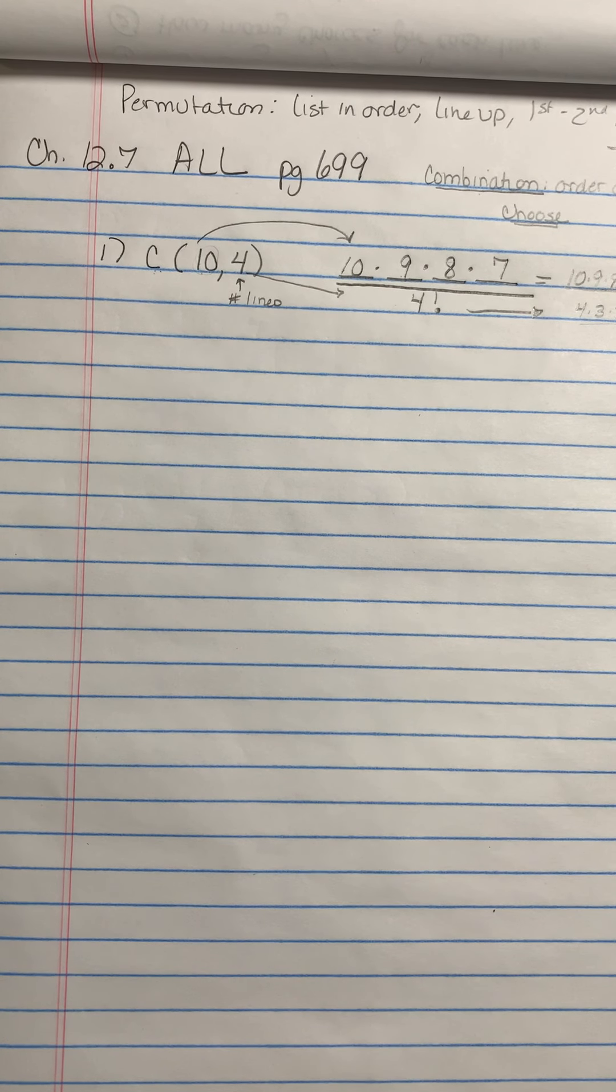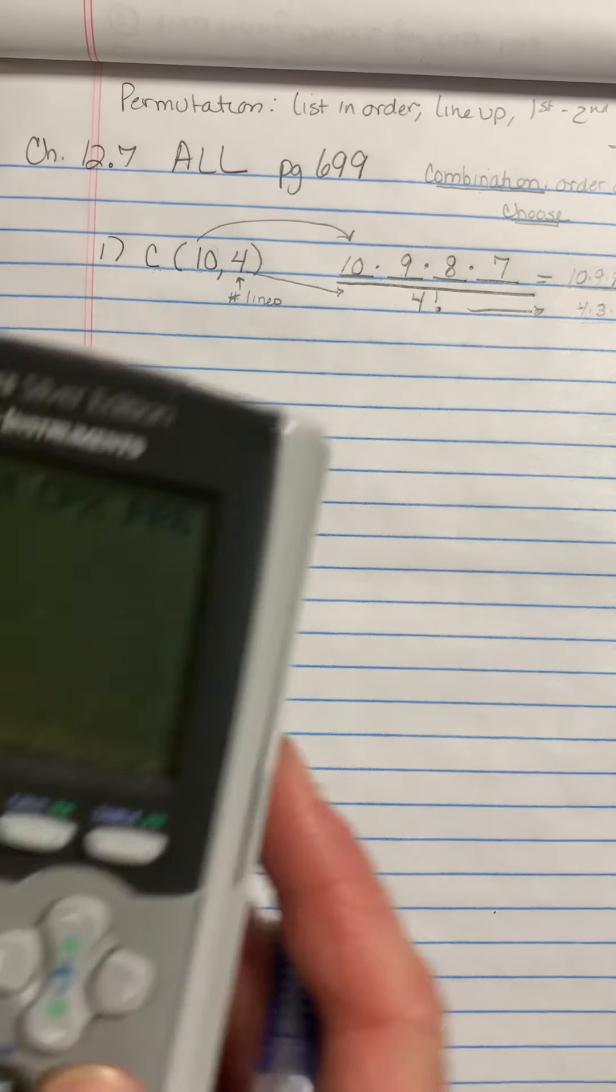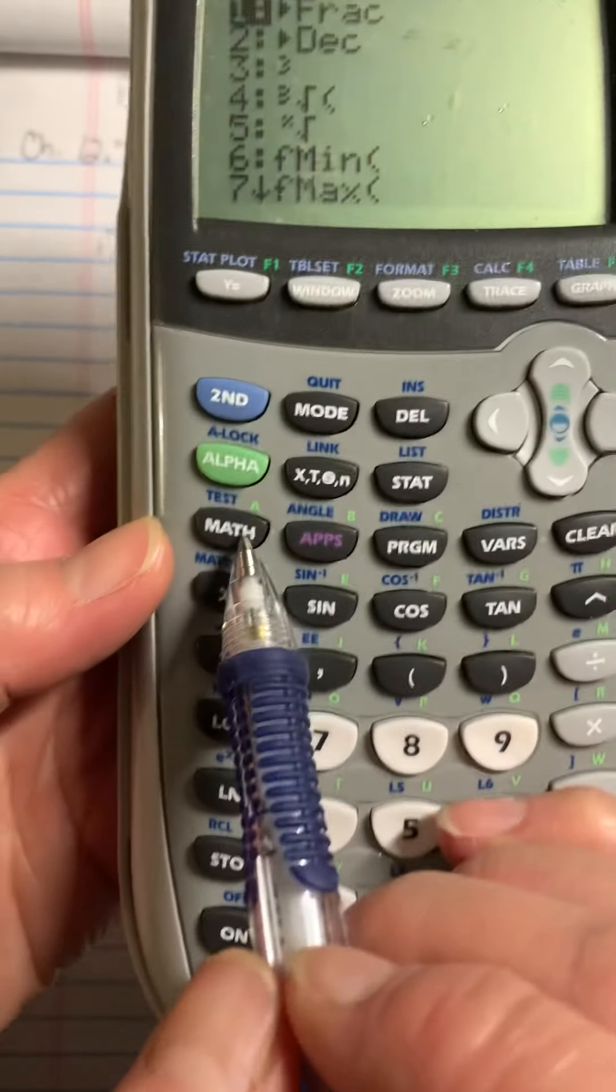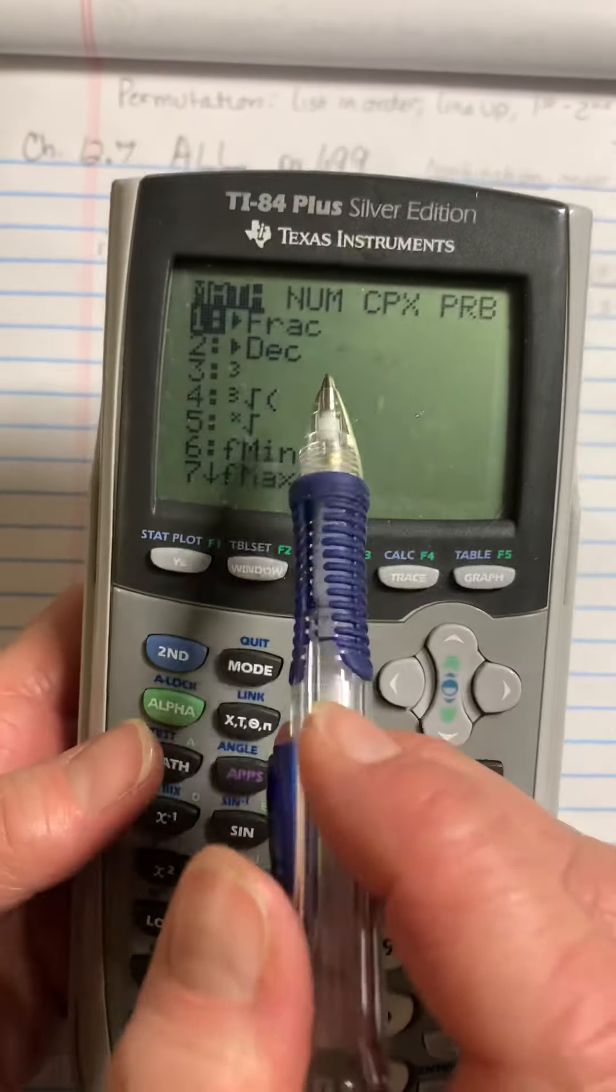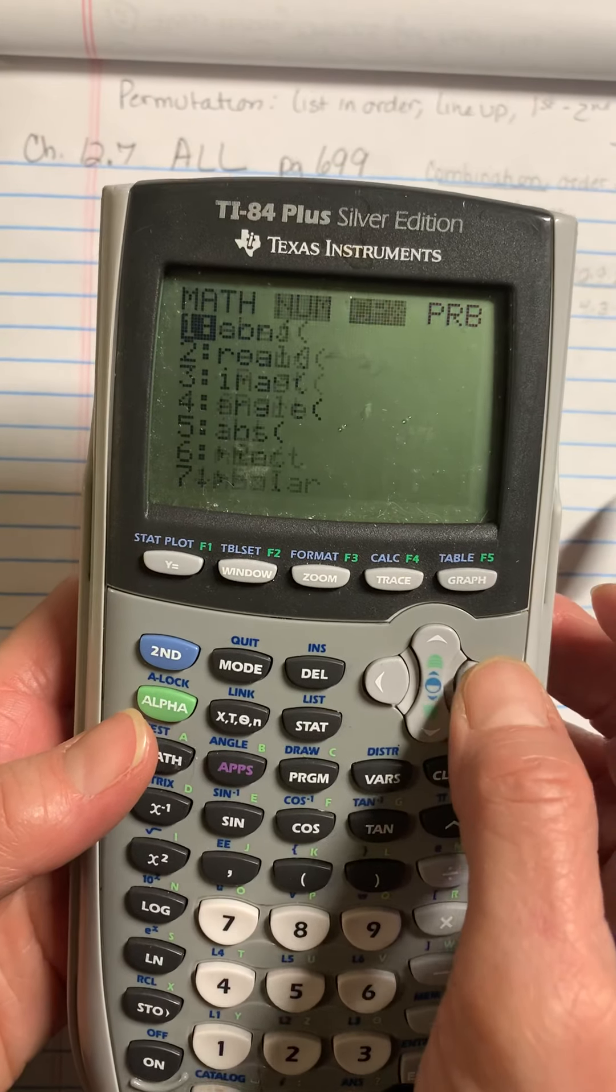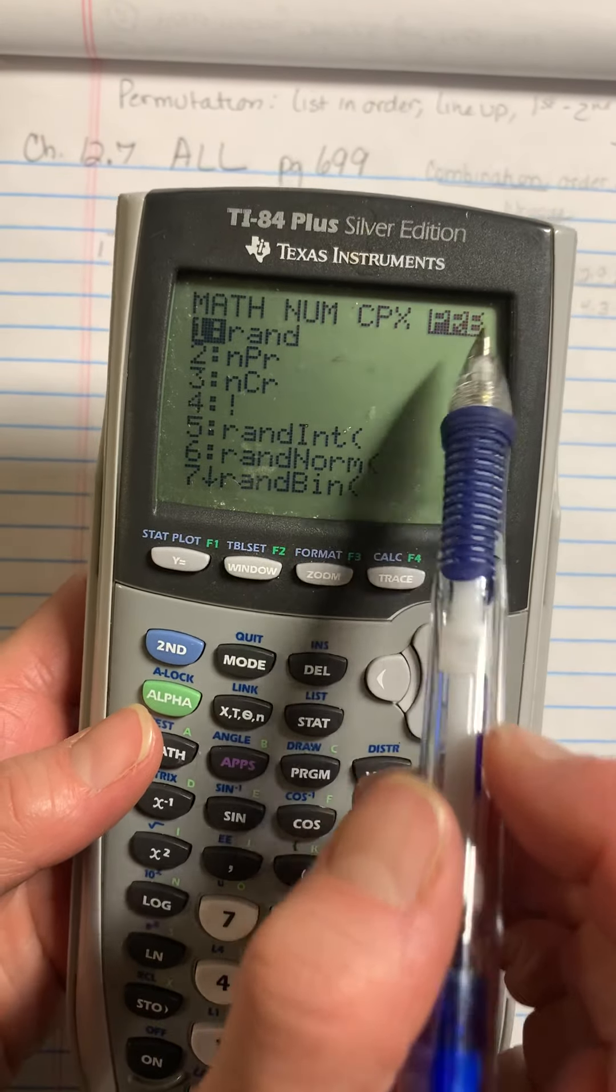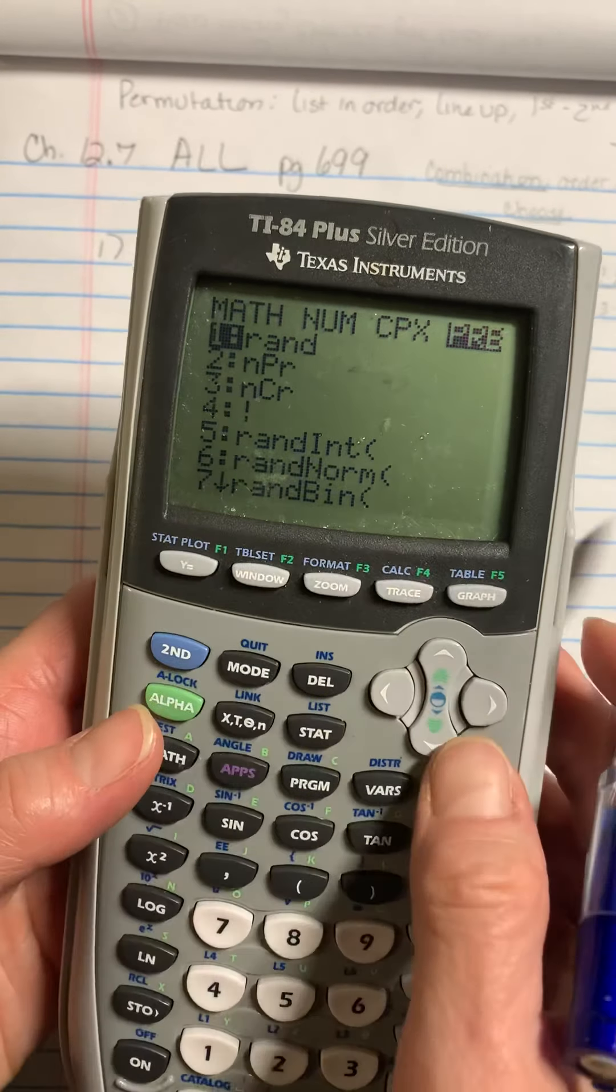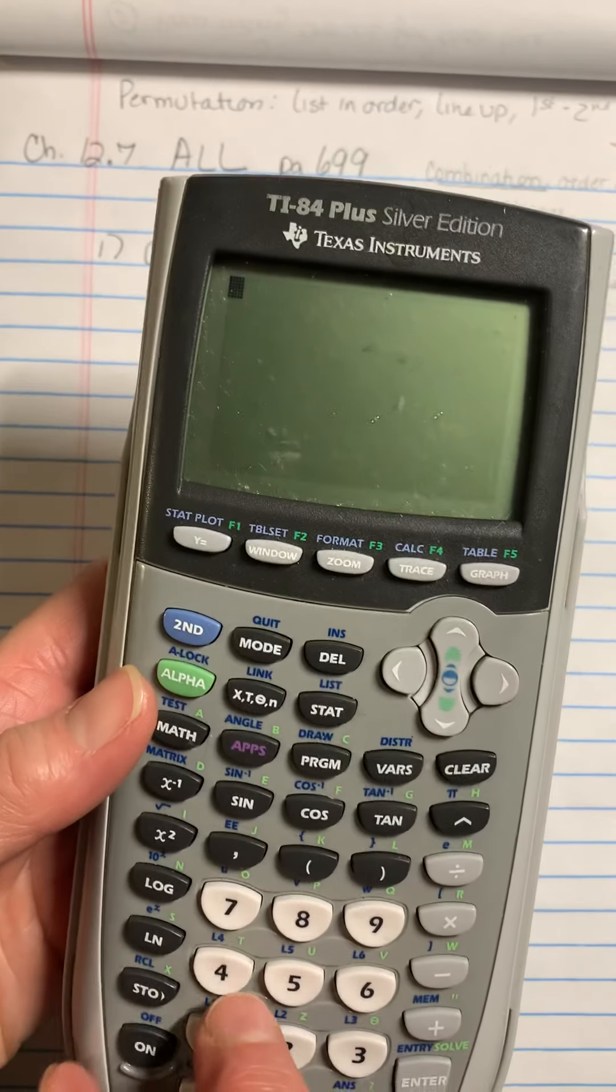So on your calculator, you may or may not have a factorial button. It really just depends on your calculator. On our calculator, we do under the math key right here, you got that math key, you hit math key, and you're going to arrow over to PRB, which is probability. And under PRB, it has your factorial button, which is number four. So if I go back and I hit four,